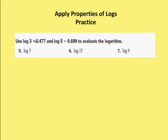All right, next set of problems. Let's use log base 10 of 3 to equal 0.477 and log base 10 of 5 to equal 0.699 to evaluate the log. Okay, so this one's pretty straightforward. This is going to be 0.699. They've already told us what that is.